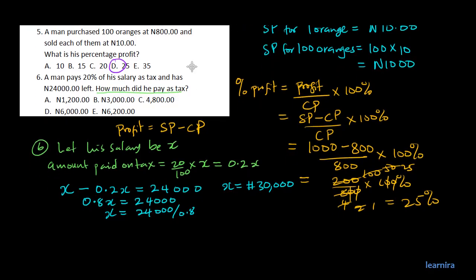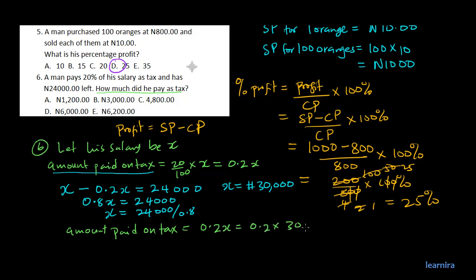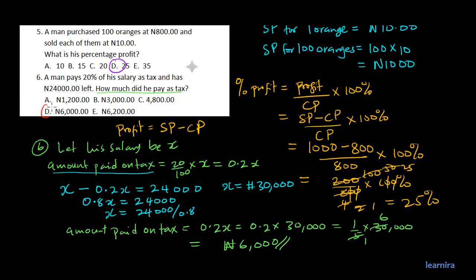To find the amount paid as tax: amount paid on tax equals 0.2X, which is 0.2 times 30,000. Since 0.2 is the same as 1 over 5, and 5 goes into 30,000 six thousand times, the amount paid on tax is 6,000 naira. The answer is D.